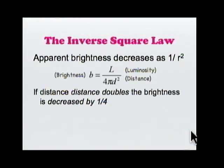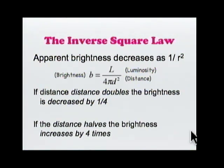Okay? So if the distance doubles, the brightness is decreased by one fourth because it's one over two squared. If the distance halves, the brightness increases four times because one over 0.5 squared will give you four.